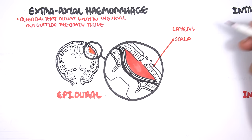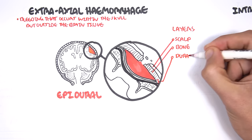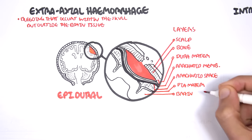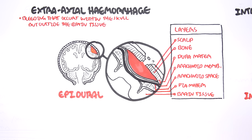The layers of the cranium from the top are: the scalp, which is your skin, subcutaneous fat, and then the bone itself. Then you have the dura mater, the arachnoid membrane, the subarachnoid space, the pia mater, and then the brain tissue itself. An epidural hemorrhage occurs between the dura mater and the bone.